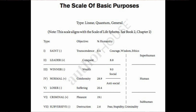You did such a great job displaying the clear path of where one could find themselves on this scale. In closing, there's one parenthetical phrase: 'This scale aligns with the Scale of Life Spheres — see Book Two, Chapter Two.' Book Two is group scales; Book One is individual scales. Chapter Two is the Scale of Life Spheres, which corresponds to this scale. This is one of several examples where a manifestation occurs in the individual but also in the group — the Scale of Basic Purposes for individuals aligns with the Scale of Life Spheres for groups.